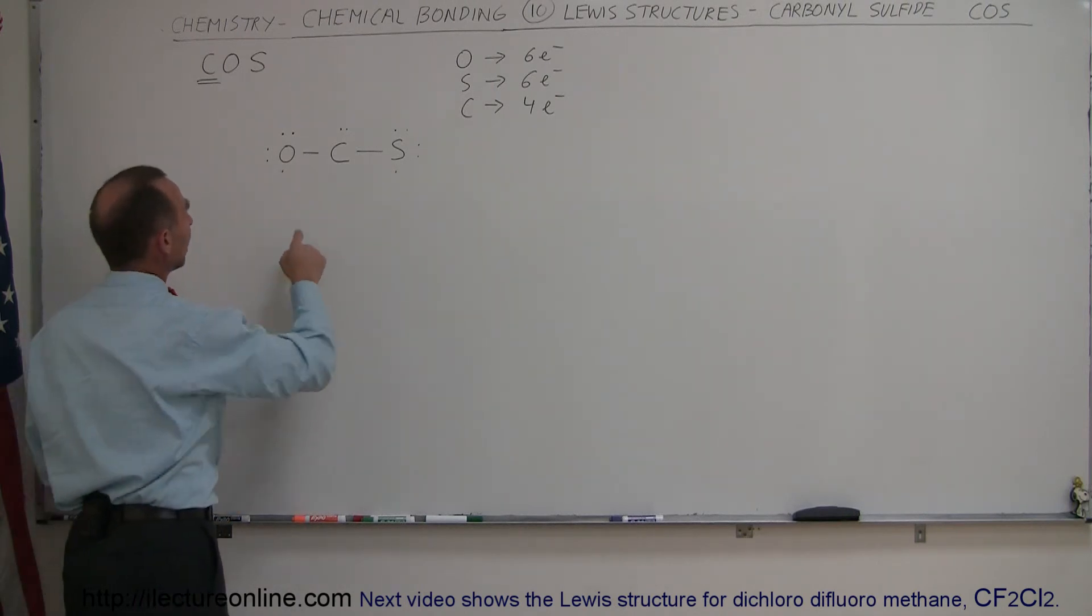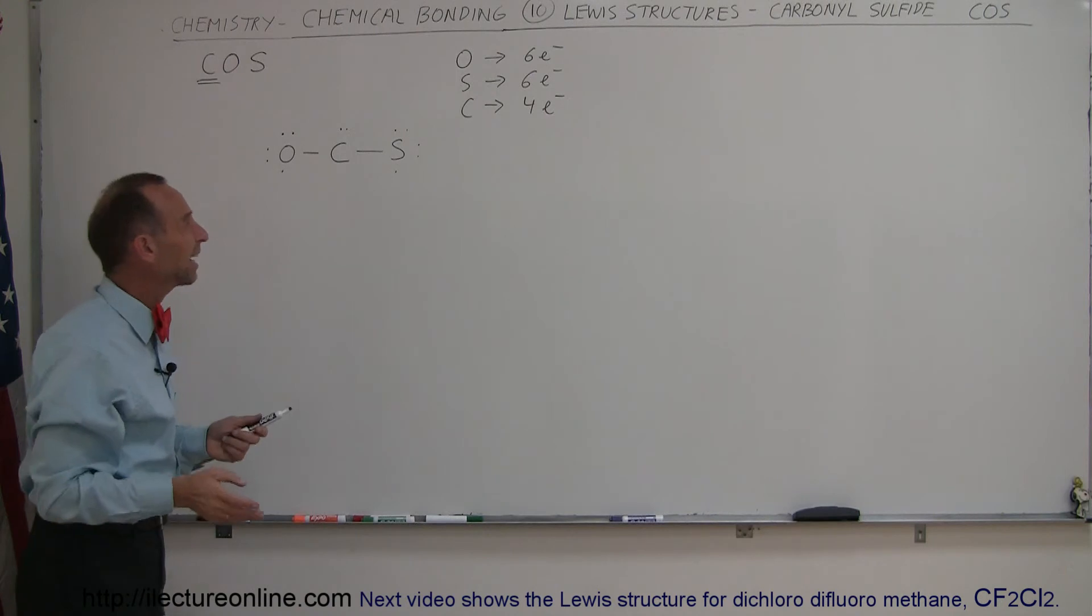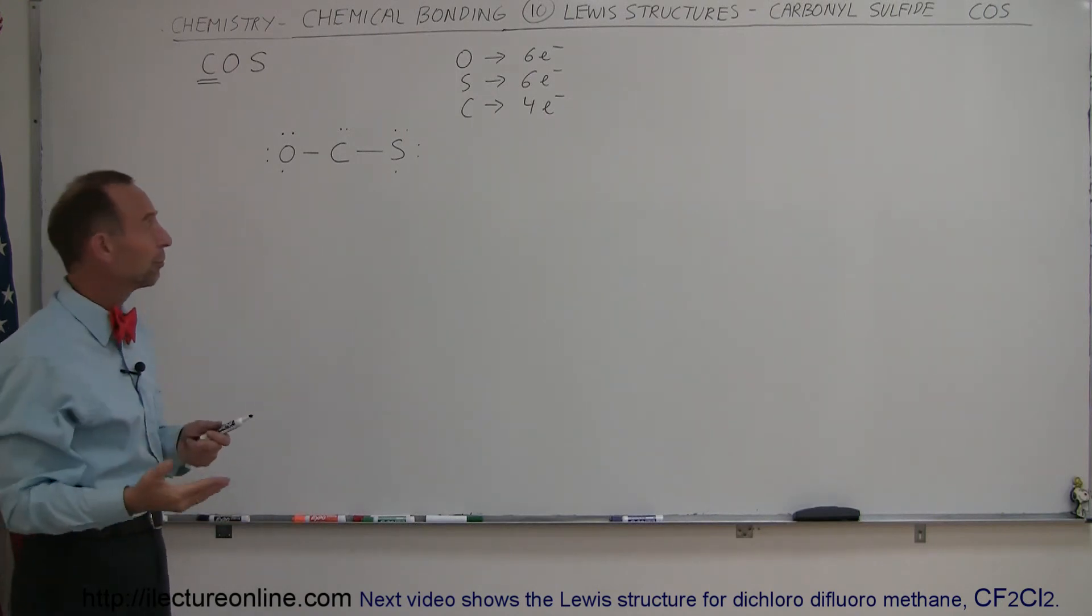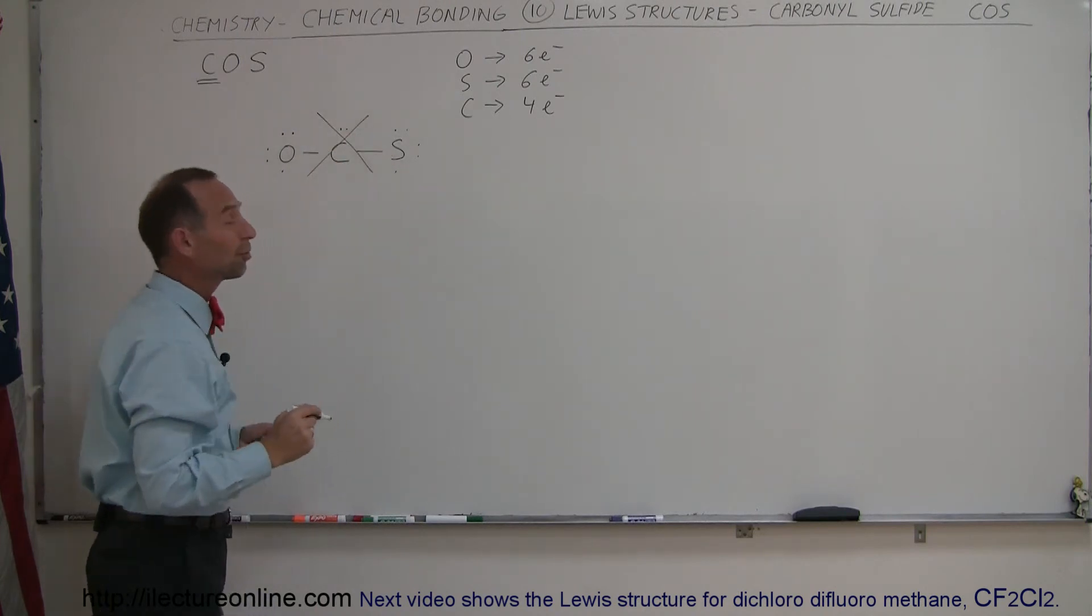which is not following the octet rule. Here we can see that we have two, four, six, seven electrons for oxygen, two, four, six, seven electrons for sulfur, so the whole thing kind of falls apart. It's not following the octet rule for oxygen, sulfur, or carbon, so therefore this is not a good option.